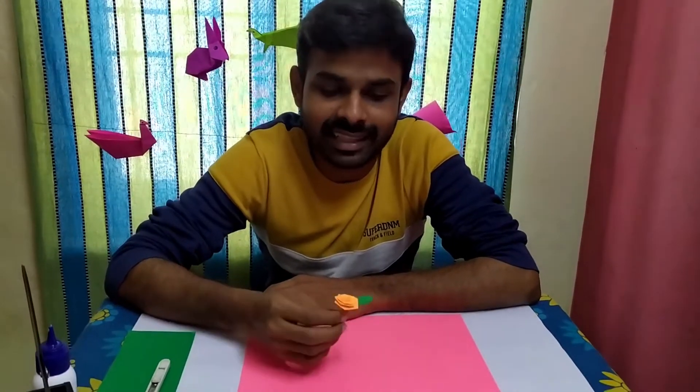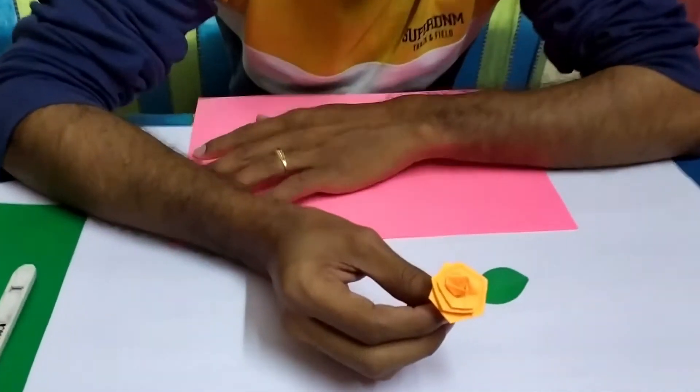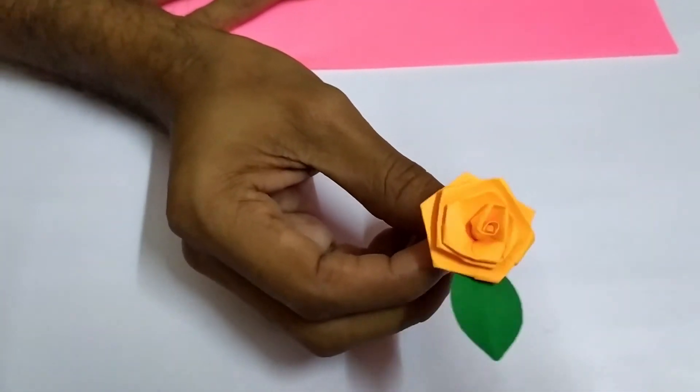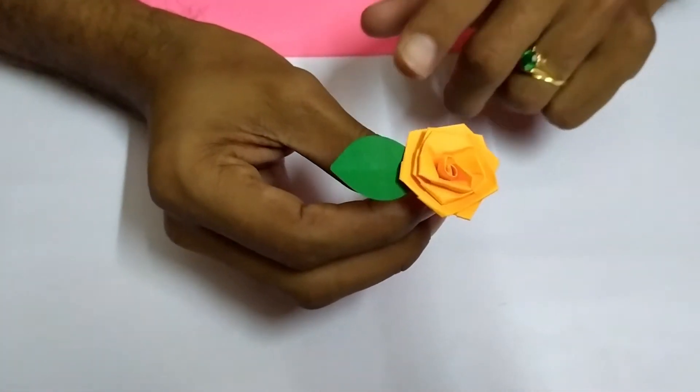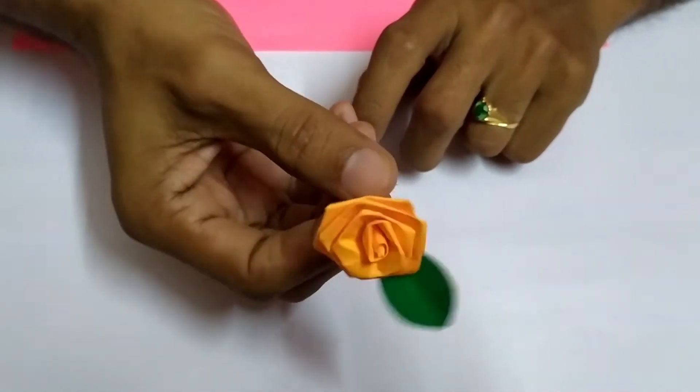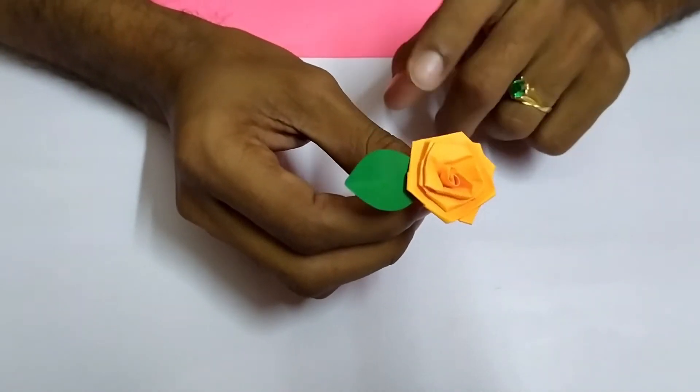Hi all, good morning. Today we are doing something interesting, a small cute little rose. See how cute it is. We're going to make this rose and a leaf with a single paper. Let's start the procedure.